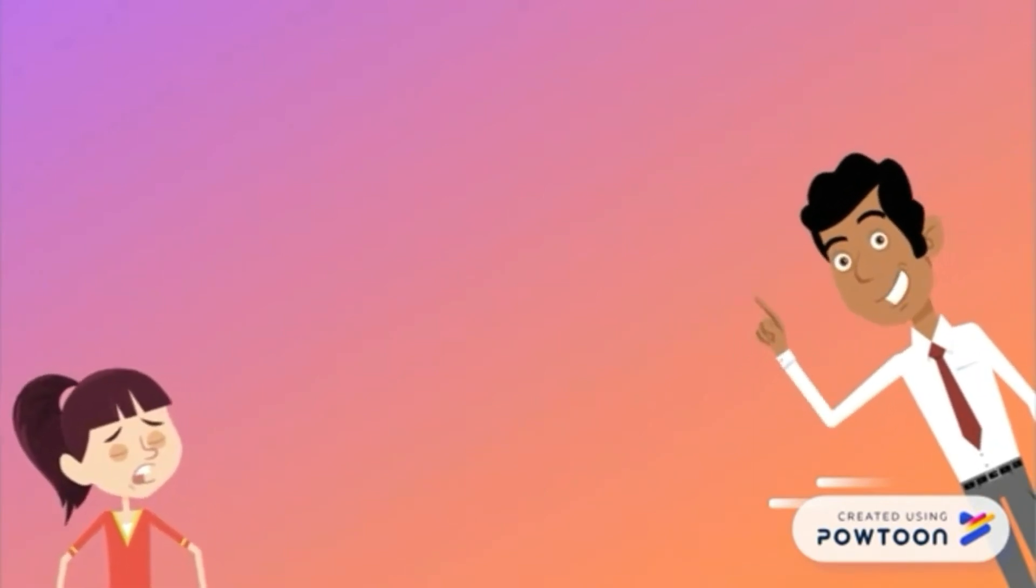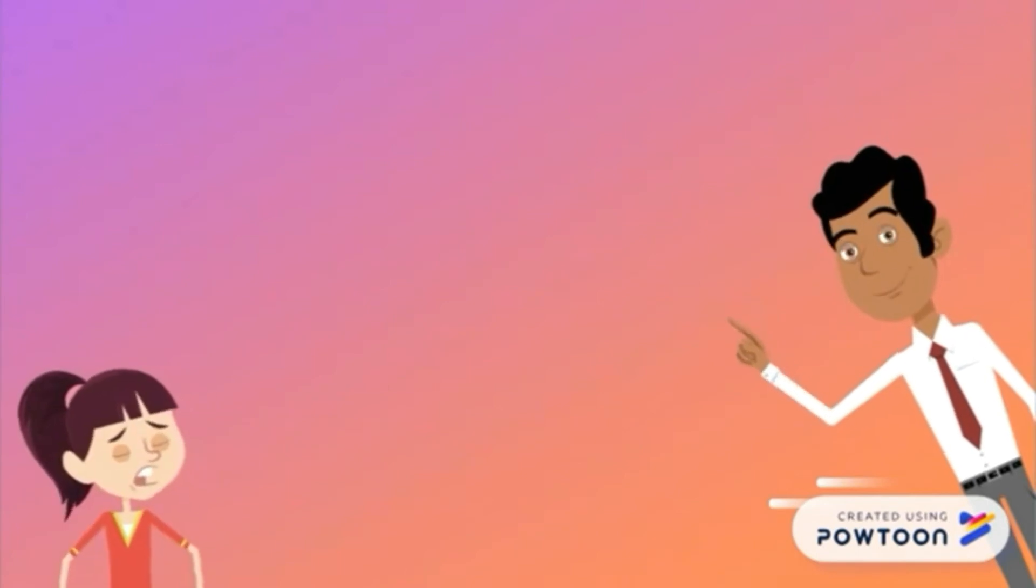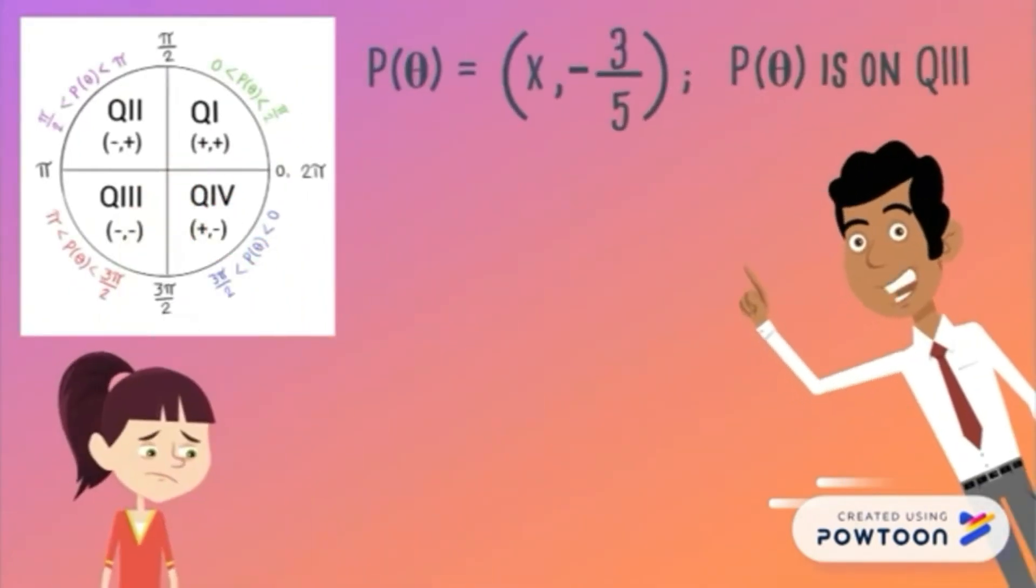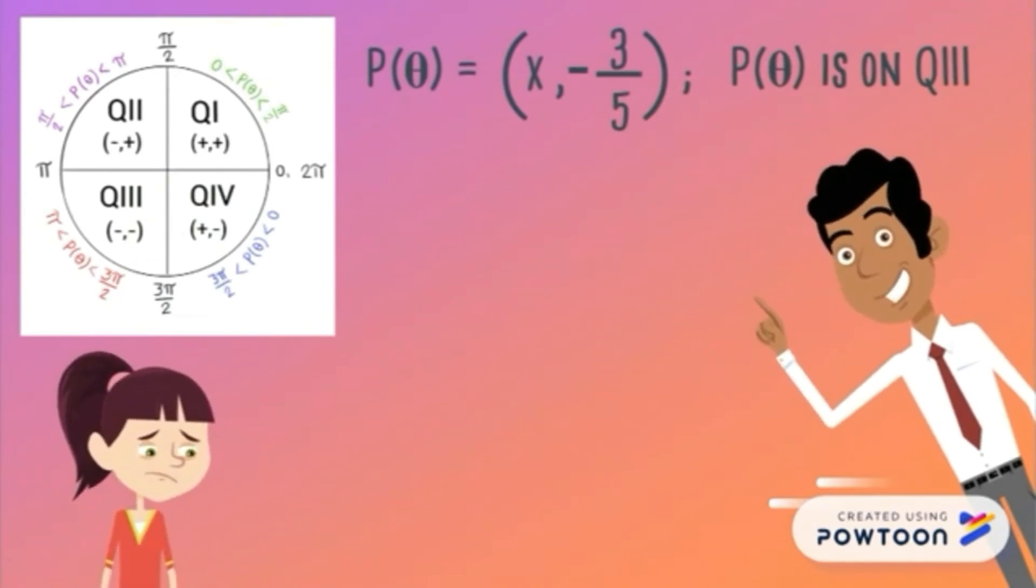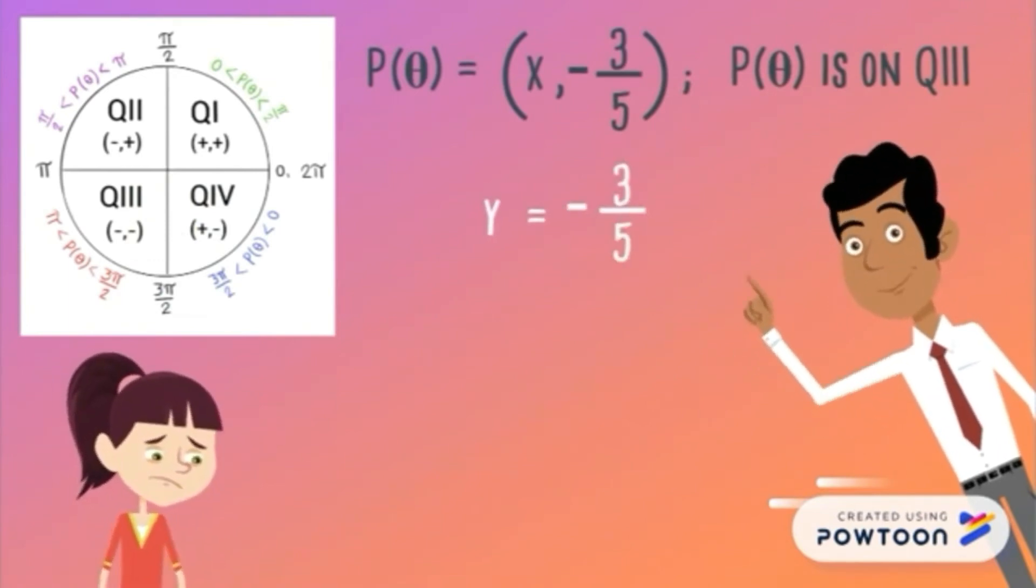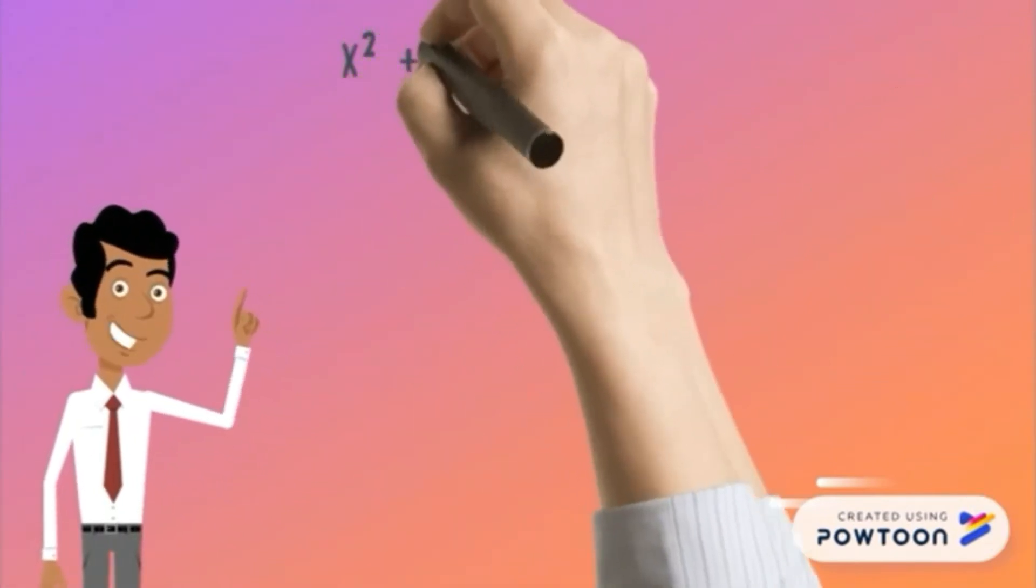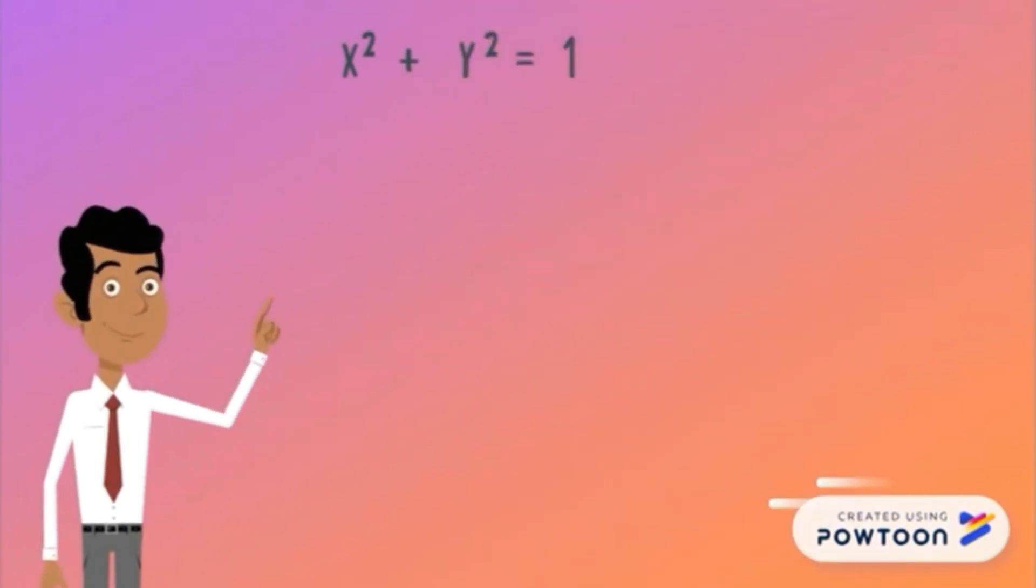Let's have our first example. In this example, we are given the y value, which is negative 3 over 5, while we are to find x. We start by using the equation x squared plus y squared equals 1. The value of y is negative 3 over 5, so we simply substitute that to y squared.